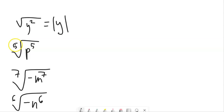Now this next one, the fifth root of p to the fifth. Remember what the fifth root is asking. It's saying what to the fifth power would give me p to the fifth? Well, it's p, right? p to the fifth is p to the fifth.